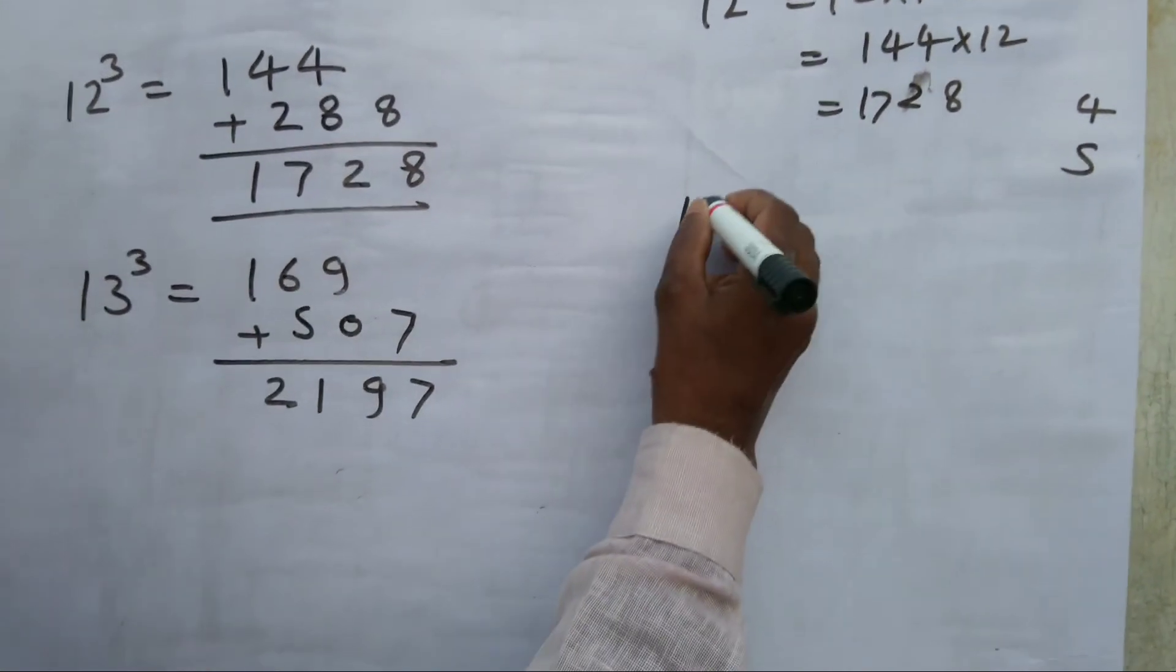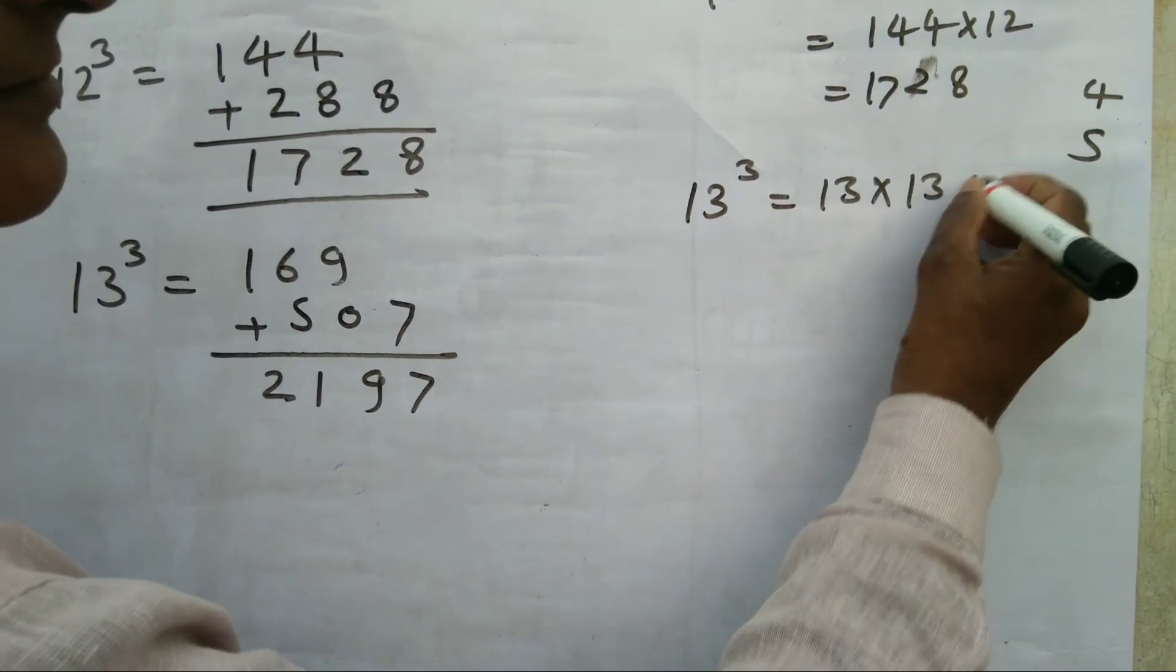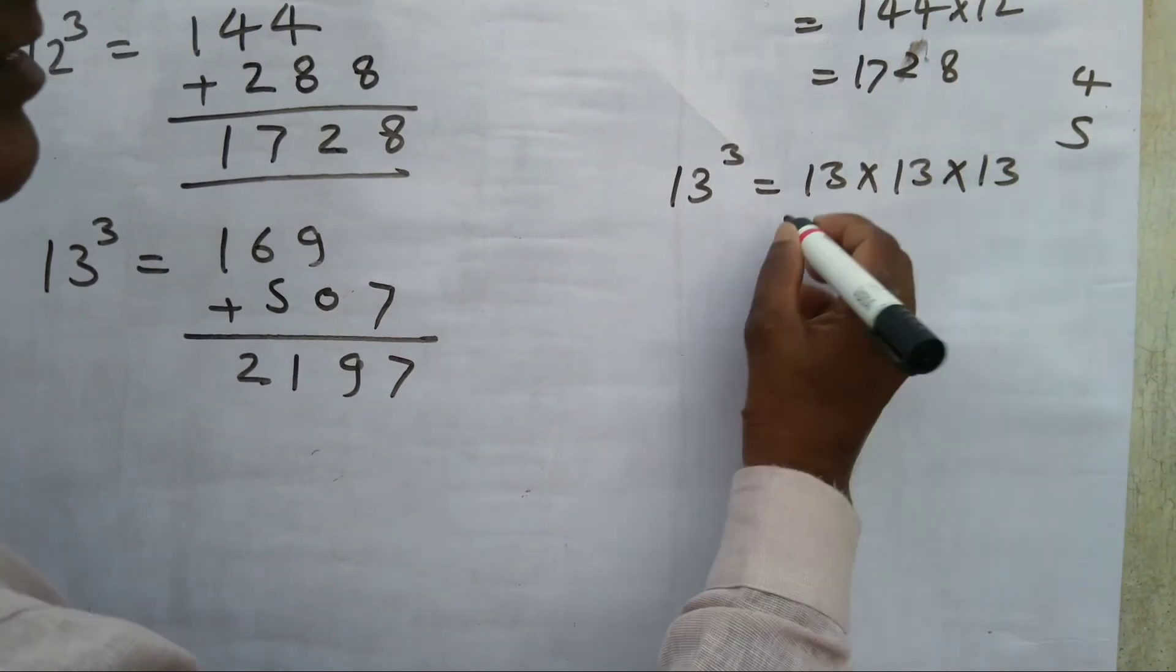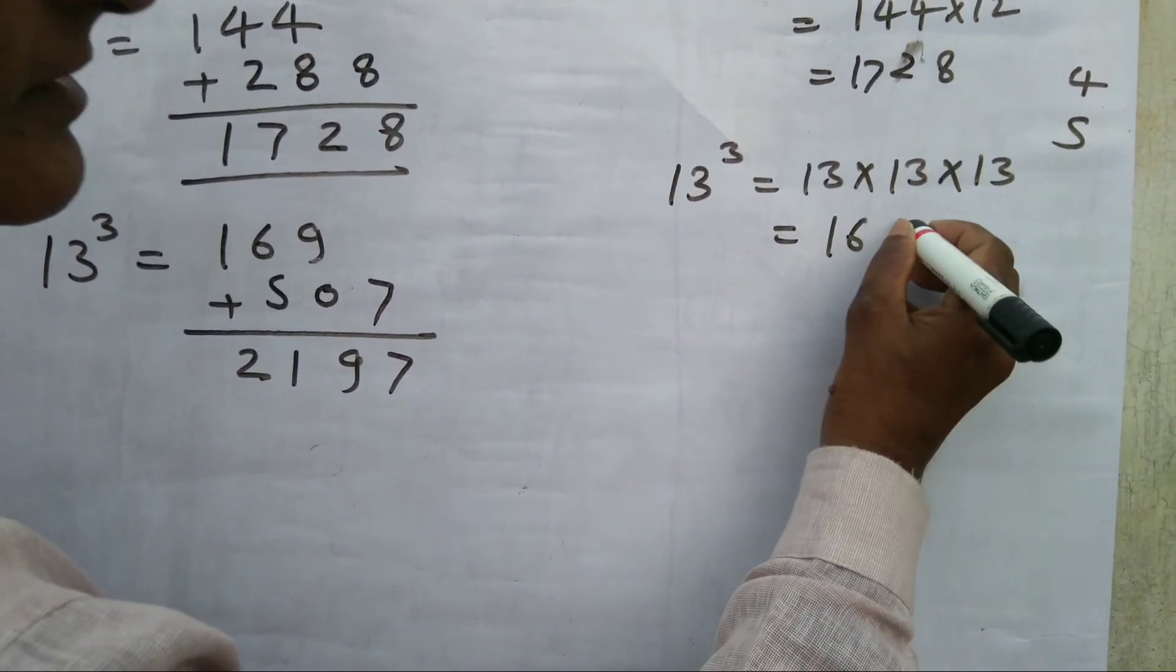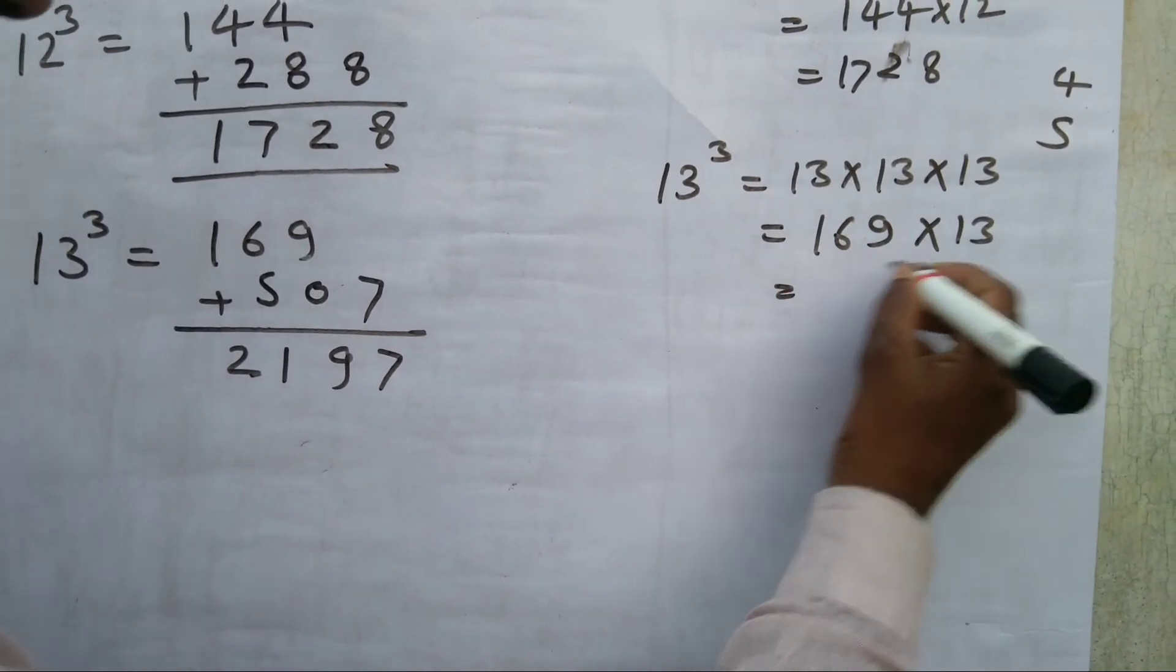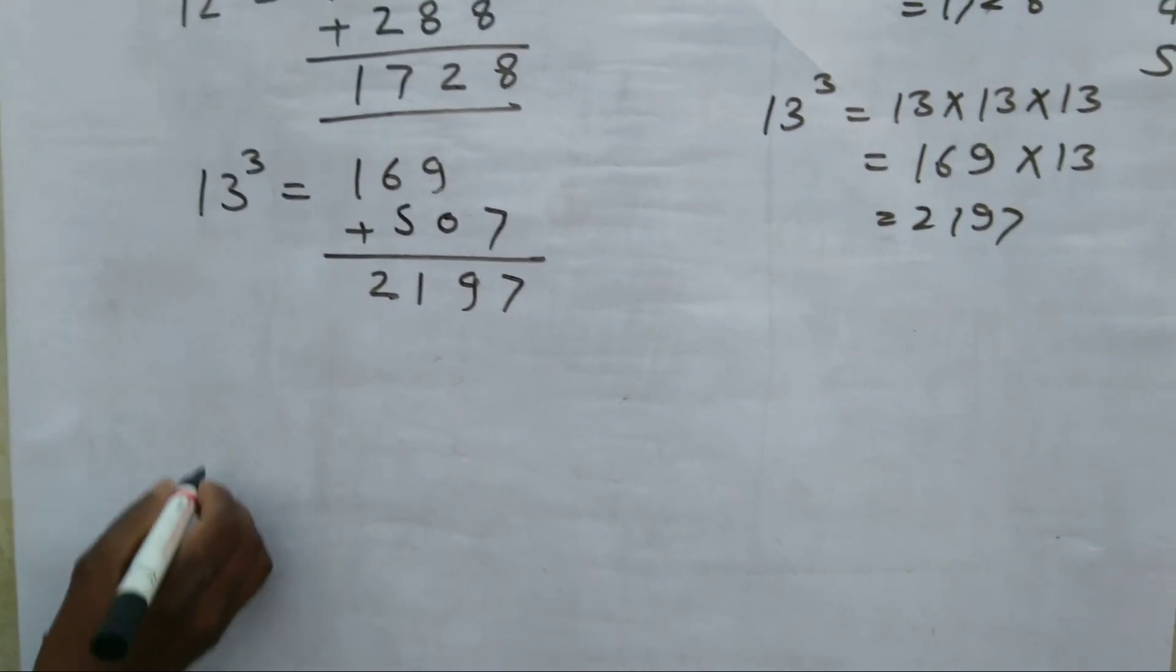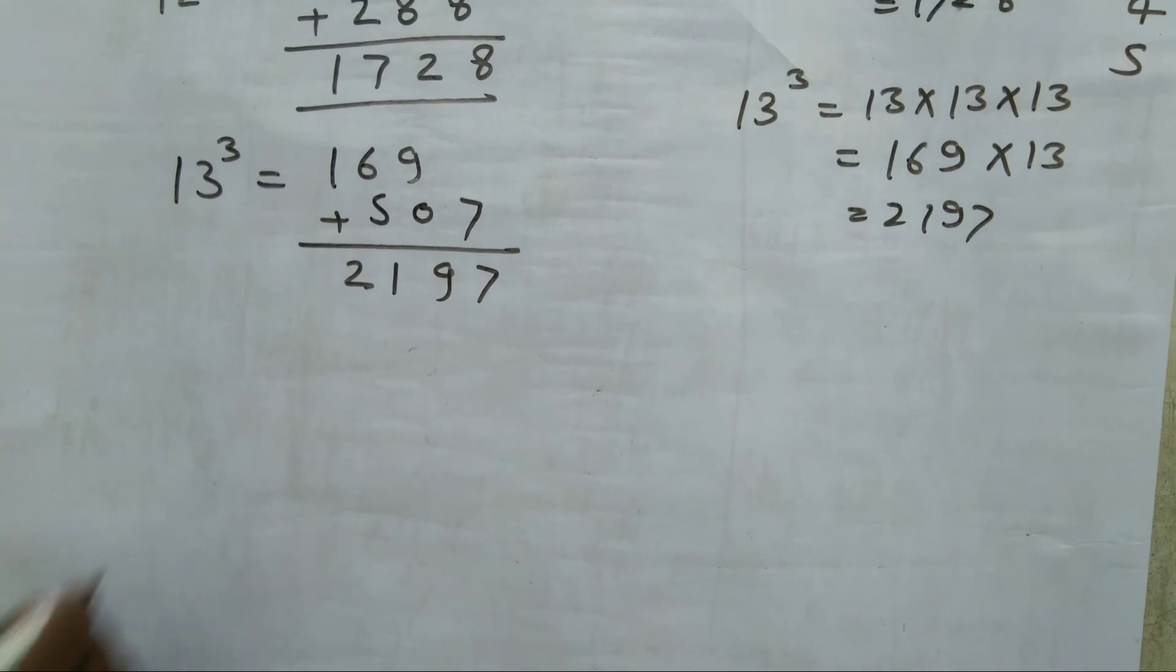Now what we calculate is 13. From this we get 13 times 13 times 13. 13 times 13 gives us 169, and 169 times 13 gives the final result.